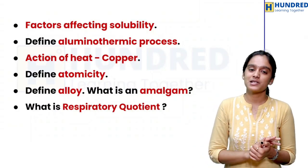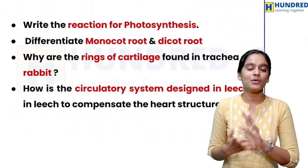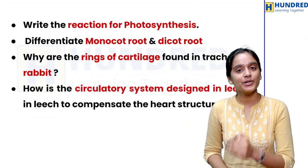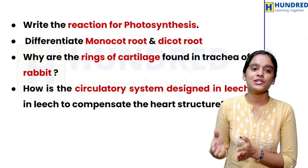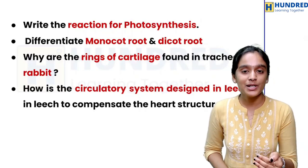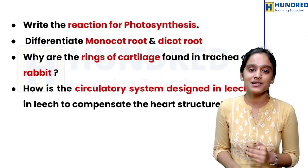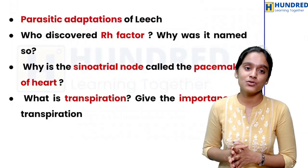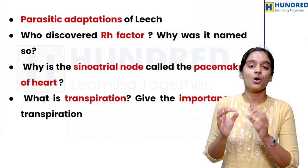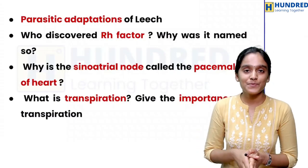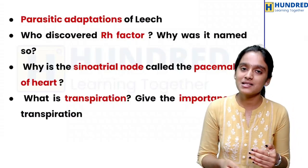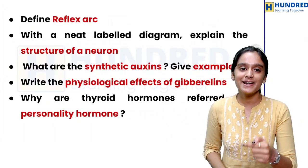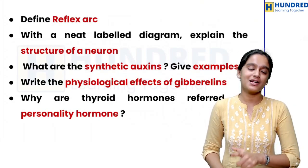Now we have important biology questions. What is respiratory quotient? This has an easy formula-based answer. The reaction for photosynthesis. Differentiate between monocot root and dicot root. Why are rings of cartilage found in the trachea of a rabbit? How was the circulatory system designed in leech to compensate for its heart structure? Parasitic adaptations of leech. Who discovered the Rh factor and why was it named so? Why is the sinoatrial node called the pacemaker of the heart? What is transpiration — give the importance of transpiration; this can be asked for 4 marks or 7 marks. Define reflex arc with a neat labelled diagram. Explain the structure of neurons — this is either 4 marks or 7 marks.